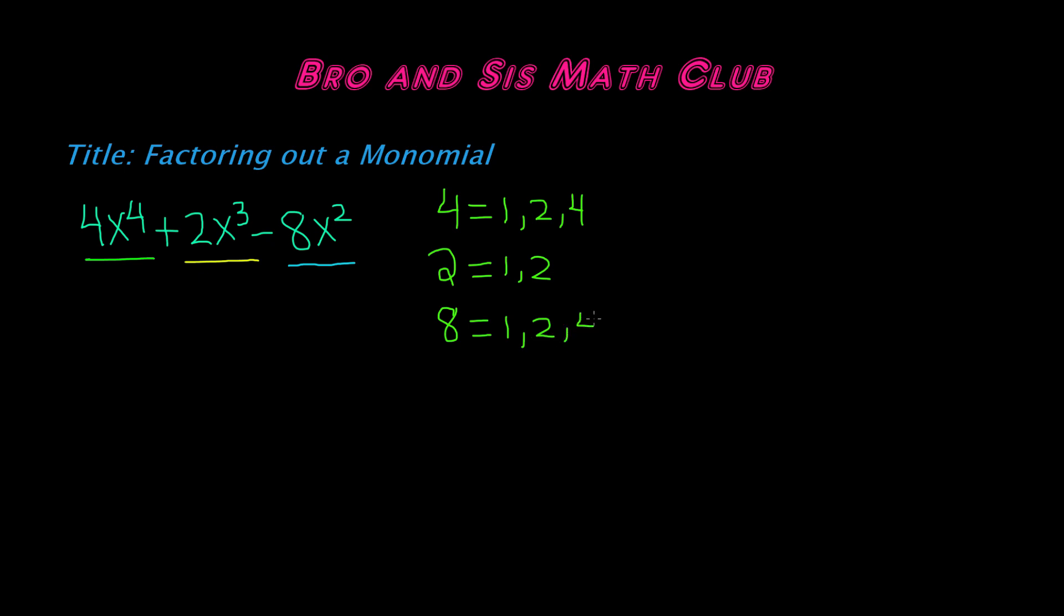2, 4, and 8. So the GCF of 4, 2, and 8 is 2, because this is the greatest common factor between these three numbers. So the GCF is 2.